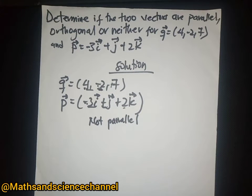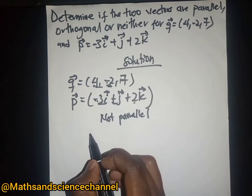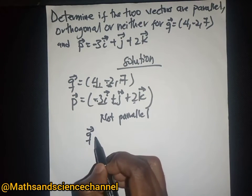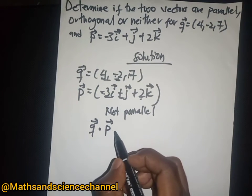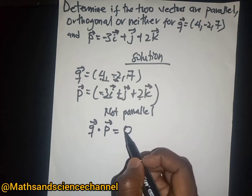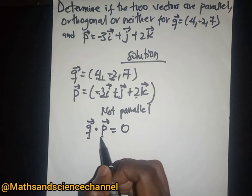In checking that, when we dot these two vectors—when we dot vector q and vector p—it will be equal to zero because they have different angles.